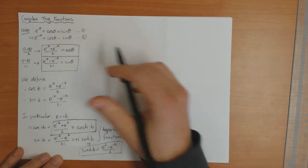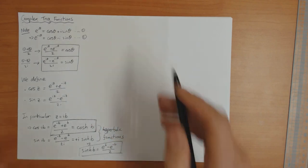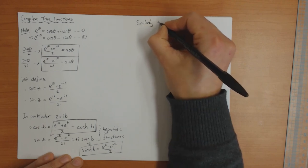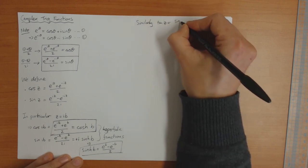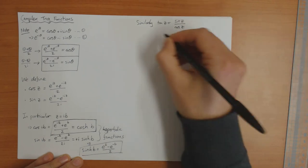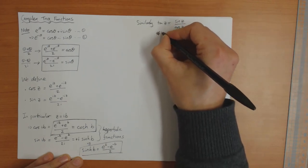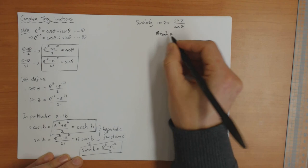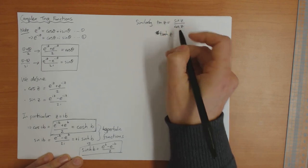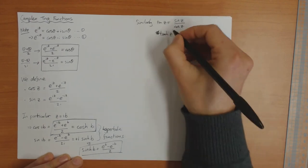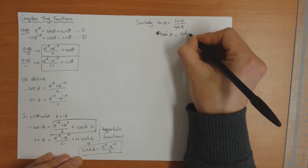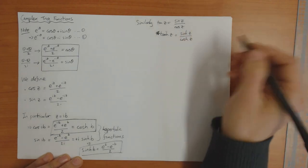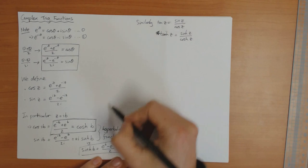That's the hyperbolic trig functions. In the same way you can define tan of a complex number — that's just sine of a complex number divided by the cos of the complex number. You can also define hyperbolic tan: tanh c = sinh c / cosh c. This tanh function appeared on the test last week. And so on — you can define all the trig functions in this way.